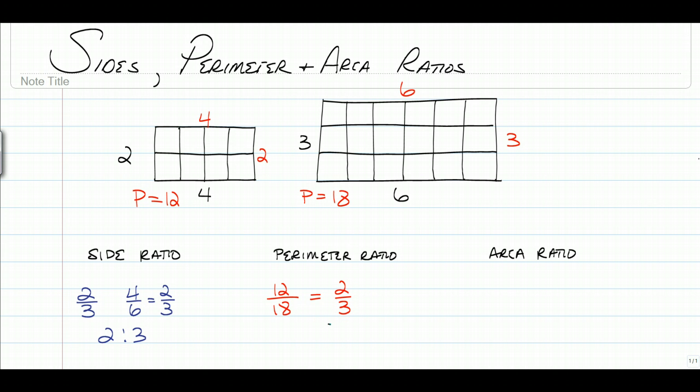Which makes sense, because if the ratio of sides is going to be 2 to 3, then the ratio of the perimeters, which is just the sum of the sides, should be the same. So we should have a ratio of the perimeters of 2 to 3.